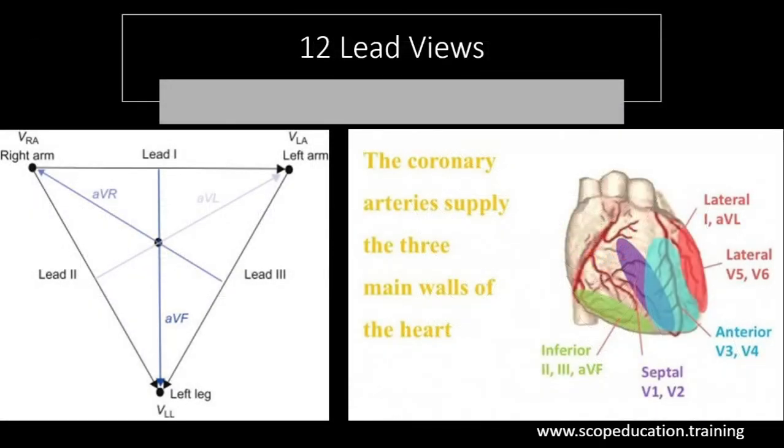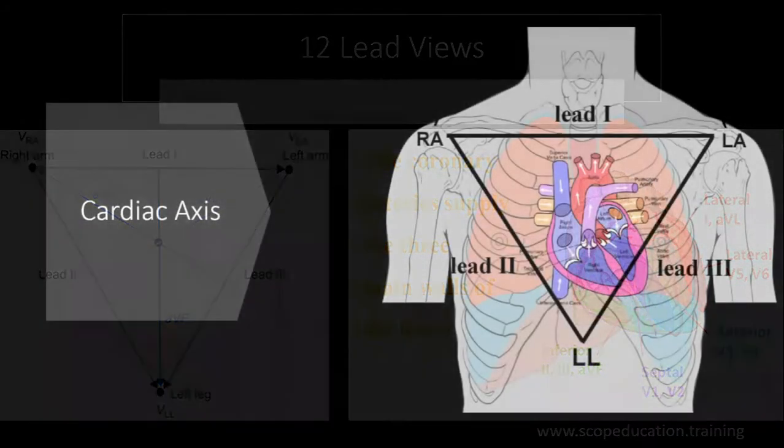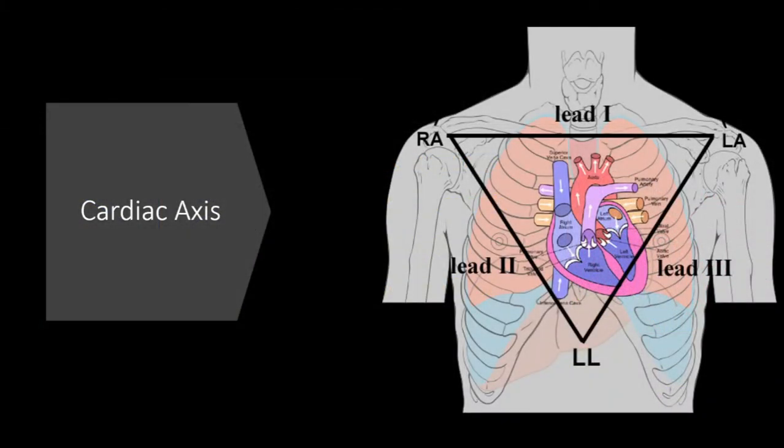Here you can see how all the leads are combined to show various parts of the heart. The lateral leads are one, AVL, V5 and V6, which we can see the lateral side of the heart. Two, three, AVF show the inferior part of the heart. AVR sees the base of the heart near the top of the right atrium. V1, V2 show the septum. V3, V4 show the anterior wall of the heart.